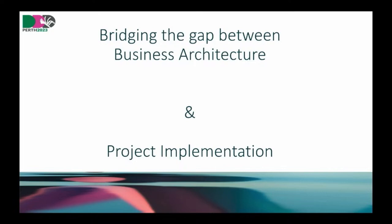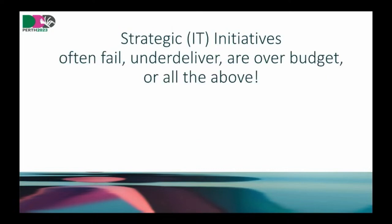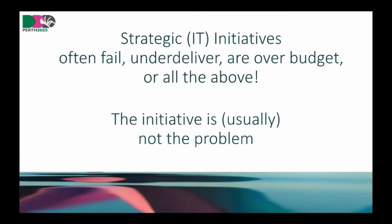Businesses have a vision and they translate it into: how can we achieve those visions? And what does operations need to do to get there? Next problem: strategic initiatives almost always fail. Why? Is it the problem that the initiative is wrong, or that we don't think about the real scope of an initiative? In reality, the initiative itself is not the problem — they want to achieve something. We should be servicing the business in helping them achieve what they want.